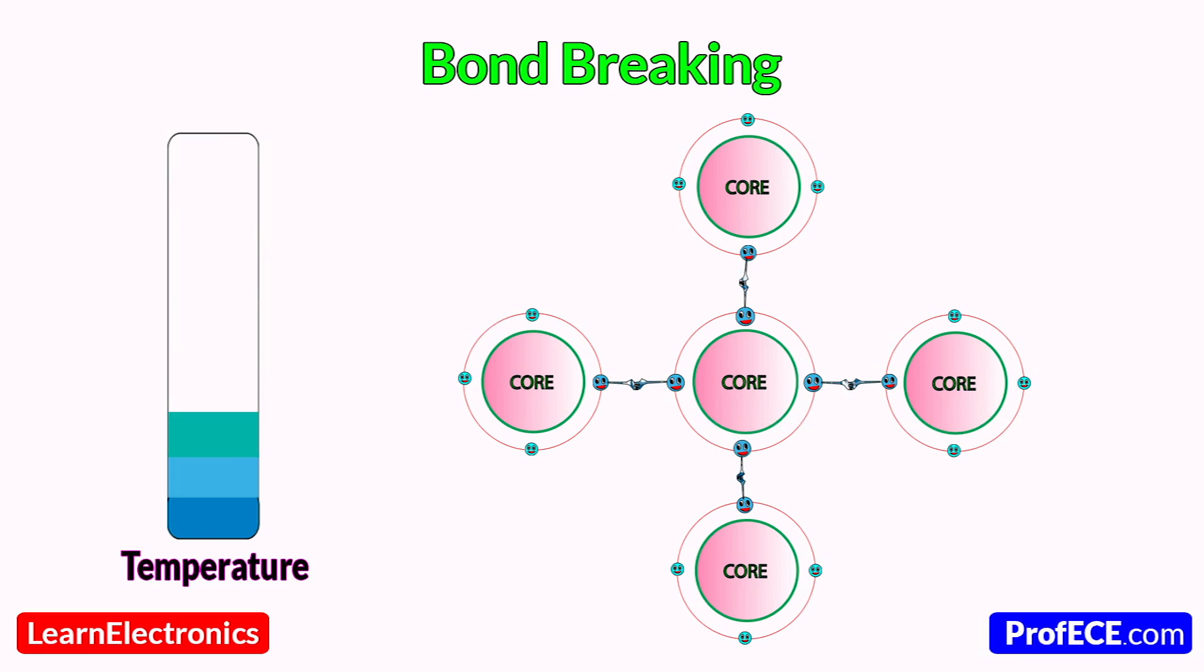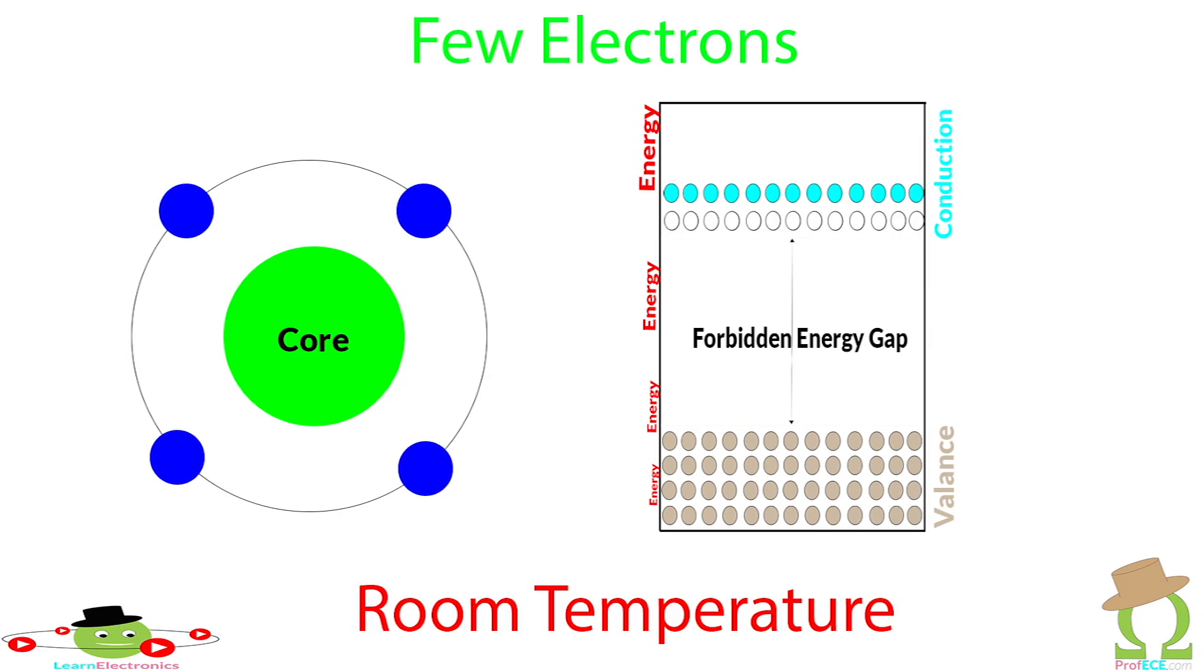In other words, covalent bonds break if temperature increases. Valence electrons get higher energy and reach the conduction band energy level, ready to conduct current.